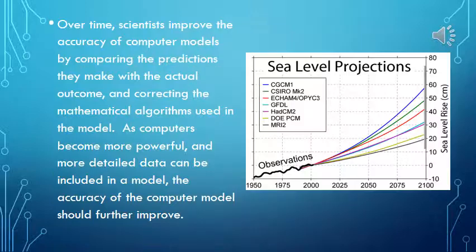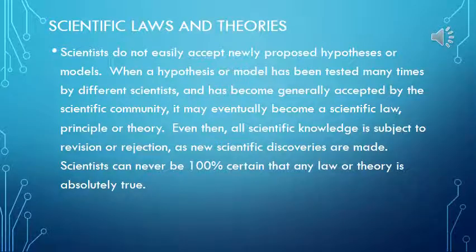Over time, scientists improve the accuracy of computer models by comparing the predictions they make with the actual outcome and correcting the mathematical algorithms used in the model. As computers become more powerful and more detailed data can be included in the model, the accuracy of the model should further improve.